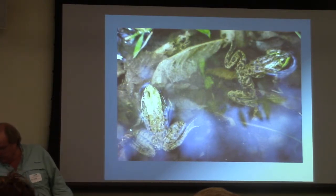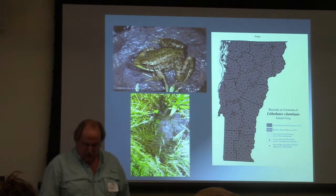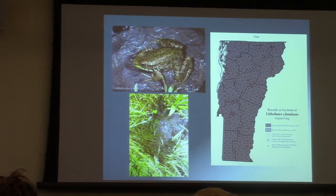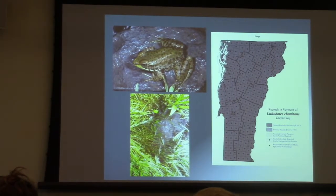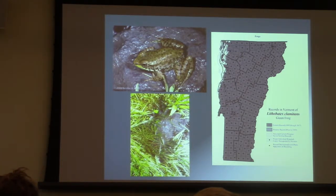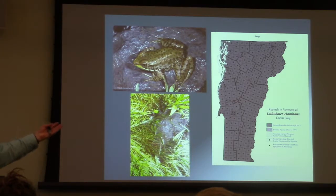So mink frog — a northern species. That's one primary reason I want to talk about it. For something like a green frog, the unit we're trying to get data on is the town, though we certainly get far more accurate location data than that. We have now gotten to the point where we have photo documentation of the green frog from every town, city, and gore in Vermont, which I think is just fantastic. Green frog — we kind of expected it would be everywhere, but now we can show that.